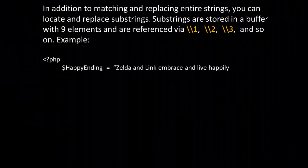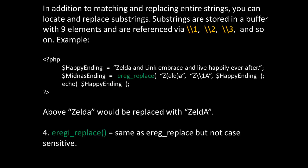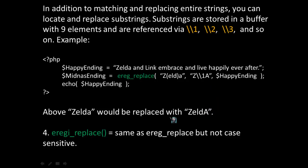In addition to matching and replacing entire strings, you can locate and replace substrings. Substrings are stored in a buffer with nine elements, referenced via double backslash one (\\1), double backslash two (\\2), and so on. For example, calling ereg_replace with 'Z(ELD)a' as the first parameter — where ELD in parentheses is ignored — and 'Z\\1A' as the replacement, will find the lowercase 'a' after Z and replace it with uppercase A. So 'Zelda' with lowercase a becomes 'ZeldA' with uppercase A.